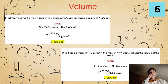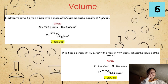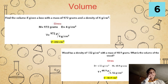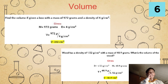We also have another example: wood has a density of 1.52 grams per cubic centimeter with a mass of 48.9 grams. What is the volume of the wood? Given: density equals 1.52 grams per cubic centimeter, mass equals 48.9 grams. Using the formula volume equals mass over density, we substitute: volume equals 48.9 grams over 1.52 grams per cubic centimeter. Our final answer is volume equals 32.17 cubic centimeters.